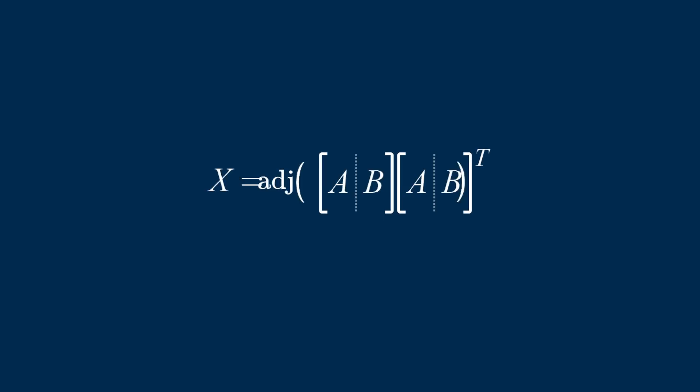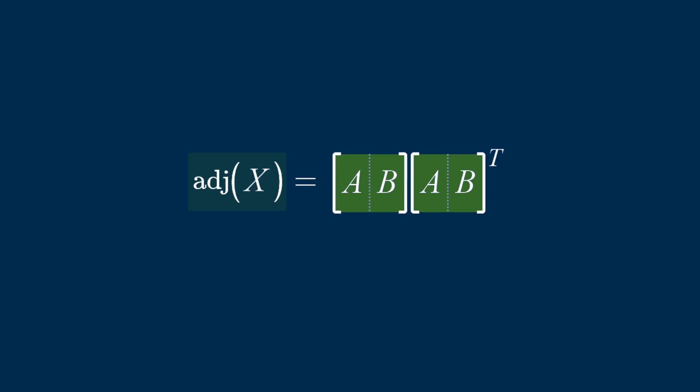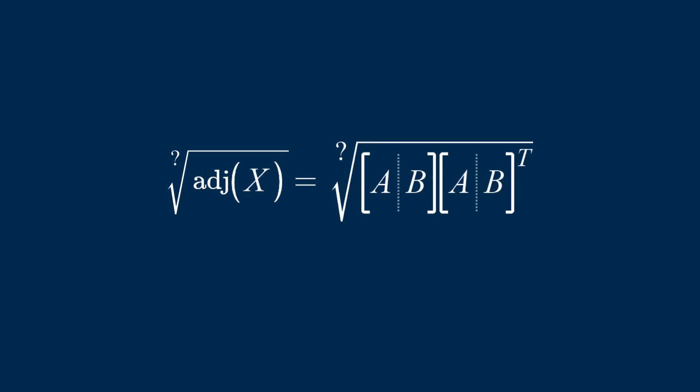Cool. So we can get x now, and we just need to extract the axes from it. Taking the adjugate of each side reveals this. The solution matrix times itself transposed equals x. So it seems like we need some sort of square root of a matrix.